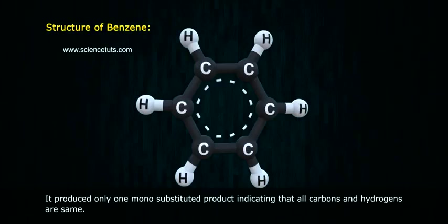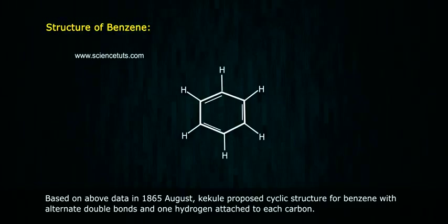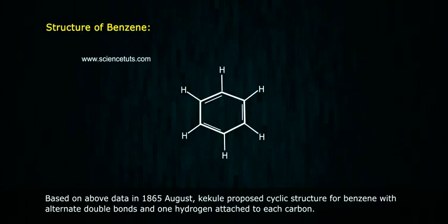Benzene produces only one monosubstituted product, indicating that all carbons and hydrogens are equivalent. Based on the above data, in 1865, August Kekulé proposed a cyclic structure for benzene with alternate double bonds and one hydrogen attached to each carbon.